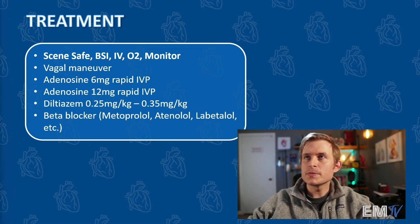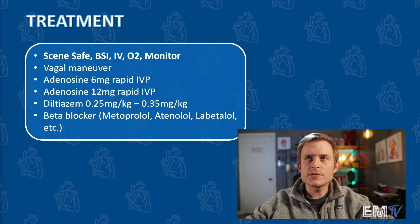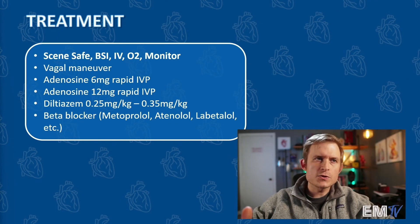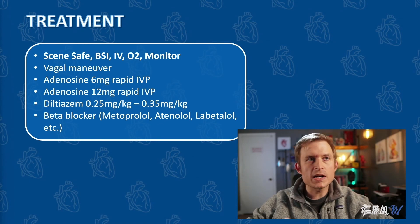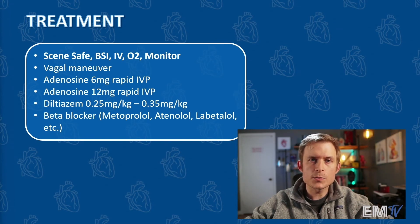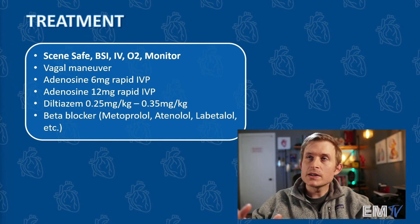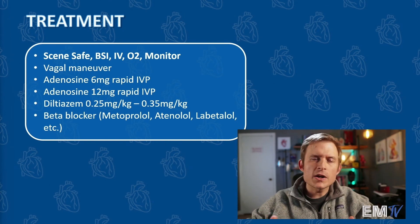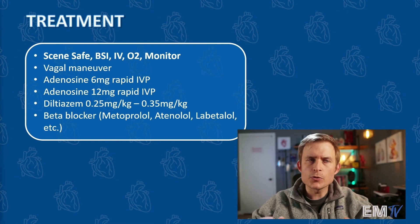Next, because this is a stable patient, we'll go to medication. We'll give adenosine 6 milligrams rapid IV push. The next dose will be adenosine 12 milligrams, again rapid IV push. We'll then move on to a calcium channel blocker like diltiazem, dosed at 0.25 to 0.35 milligrams per kilogram, slower IV push. Finally, we could consider a beta blocker like metoprolol, atenolol, or labetalol — not to treat the high blood pressure, but to help reduce the heart rate. Then, rapid transport.